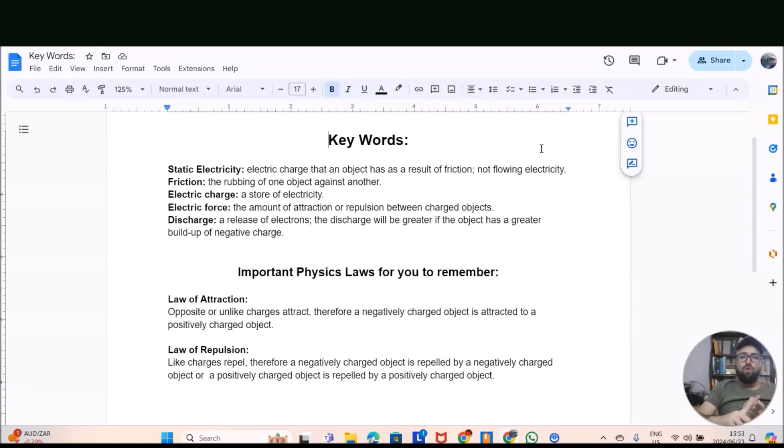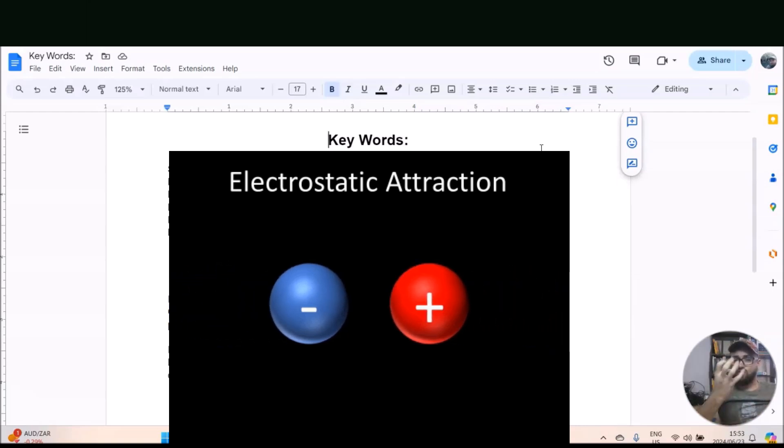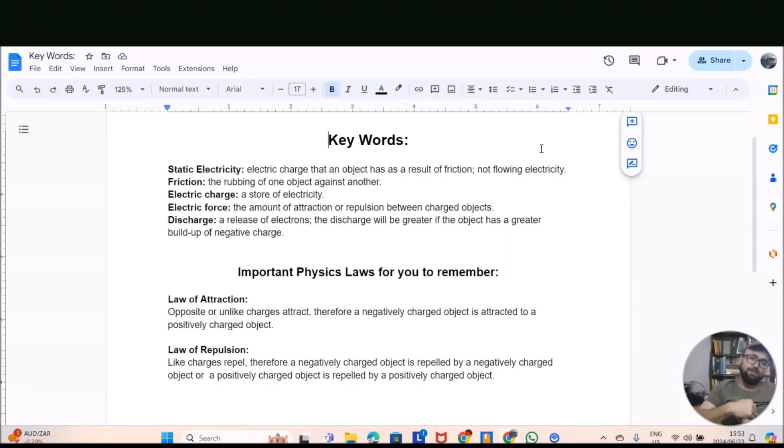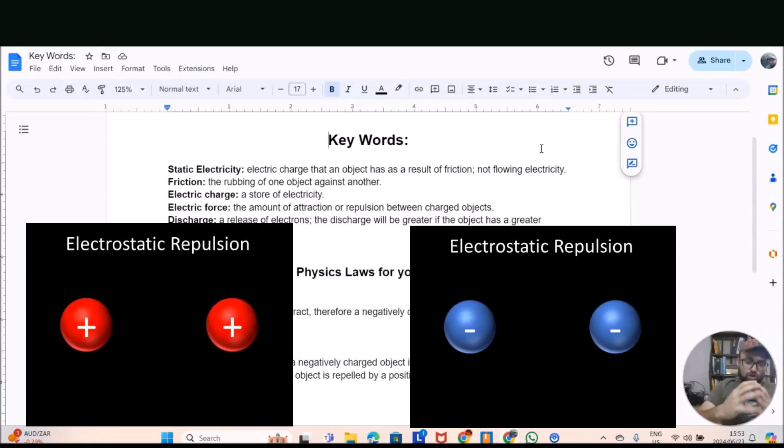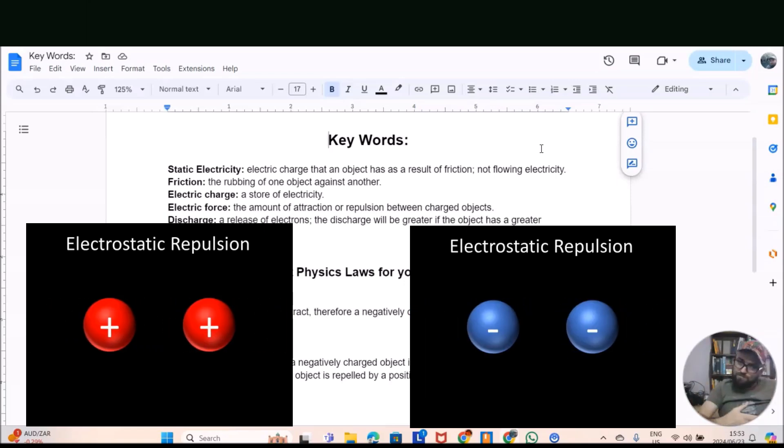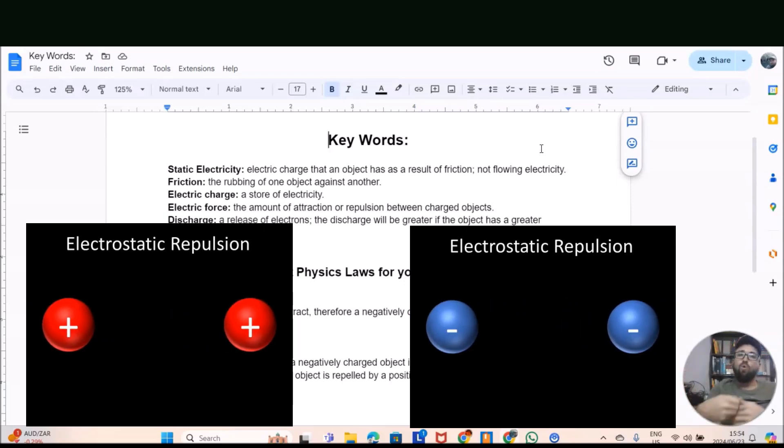Now you have to remember two laws for grade 8 with regards to electricity. The first one is the law of attraction - that is when opposite or unlike charges attract. Therefore, a negative charged object is attracted to a positive charged object. And the opposite of the law of attraction is the law of repulsion - that is when like charges, same charges, repel. Therefore, a negatively charged object is repelled by a negatively charged object.